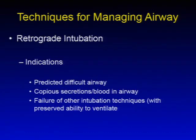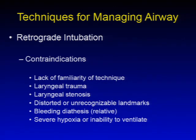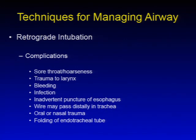Indications for retrograde intubation include predicted difficult airways, copious secretions or blood in the airway, or failure of other intubation techniques with preserved ability to ventilate — as this is not an emergent technique. Contraindications include lack of familiarity, laryngeal trauma, laryngeal stenosis, distorted landmarks, relative contraindication of bleeding diathesis, and severe hypoxia or inability to ventilate. Complications include sore throat, hoarseness, laryngeal trauma, bleeding, infection, inadvertent esophageal puncture, wire passing distally, or oral/nasal trauma.